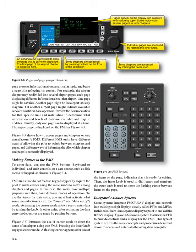Pressing the inner knob engages cursor mode. A flashing cursor appears over one of the items on the page, indicating that it is ready for editing. Then the inner knob is used to dial letters and numbers; the outer knob is used to move the flashing cursor between items on the page.